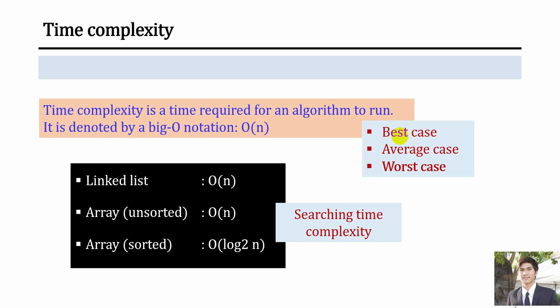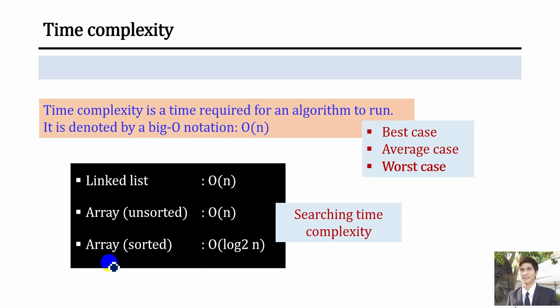Let's start from time complexity. Time complexity is normally the time required for an algorithm to run. Every time we run a program, the execution time really depends on how we define our code, how we control the process flow, how many loops we have, or what type of data structures we use — making execution time less or more depending on the logic. Time complexity is normally denoted by Big O notation.